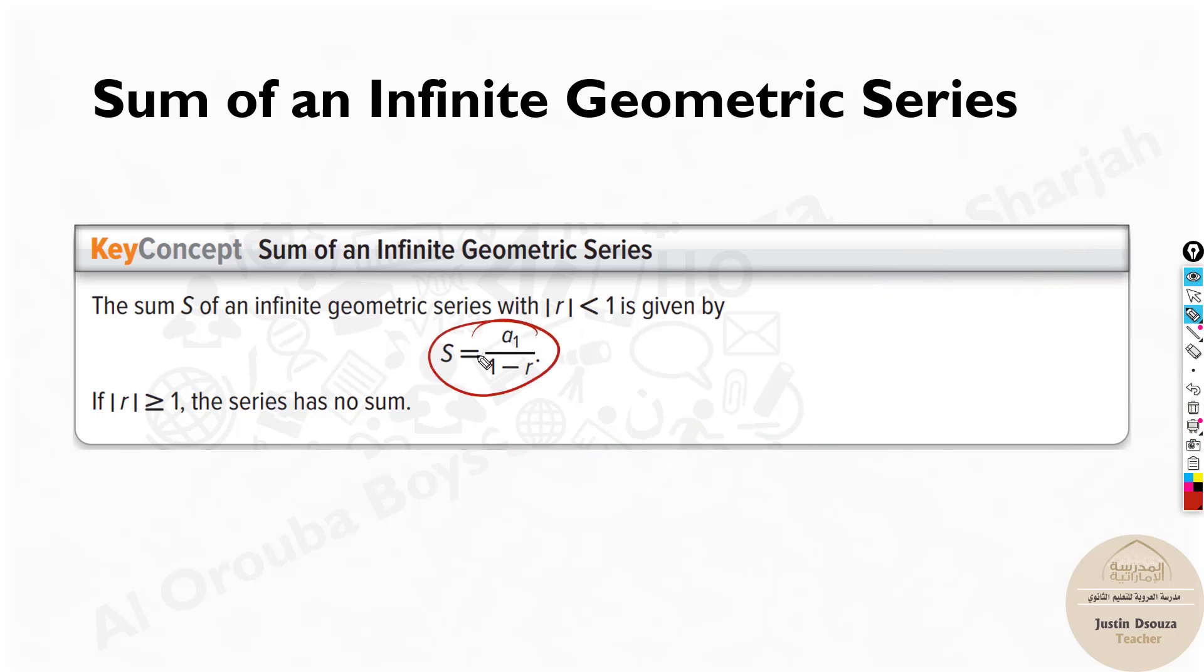Now all you need to do is use this formula. The first term, whatever it is the first term, you just put it up, one minus r. Simple formula. But very important that r must be less than one. If r is more than one, that means it's increasing.